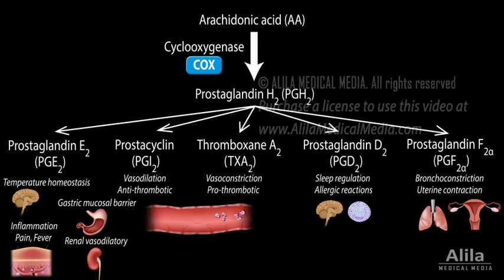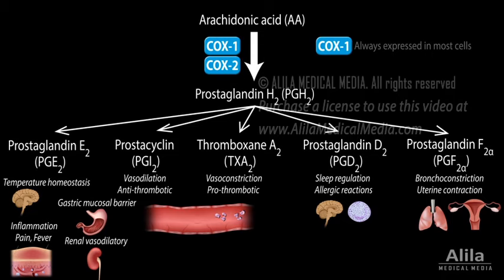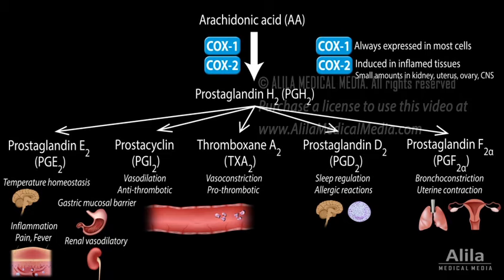There are two known COX enzymes: COX1 and COX2. COX1 is expressed constitutively in most cells and is the major source of physiological prostaglandins. COX2 is selectively induced by inflammatory stimuli and is the predominant source of inflammatory prostaglandins, but COX2 also has some physiological functions in some tissues.